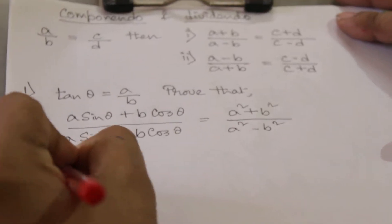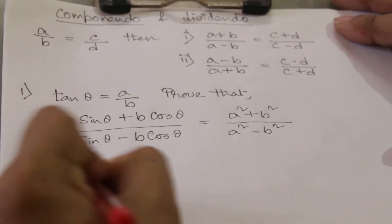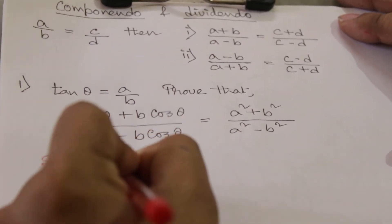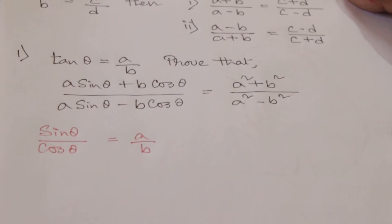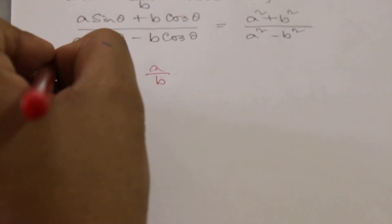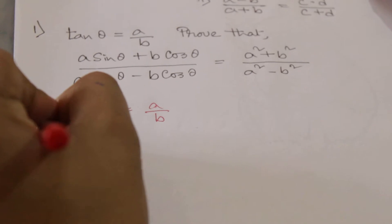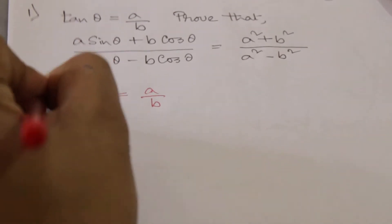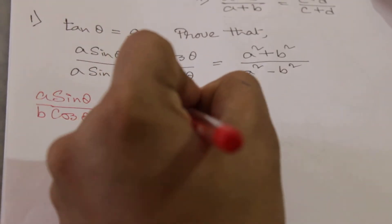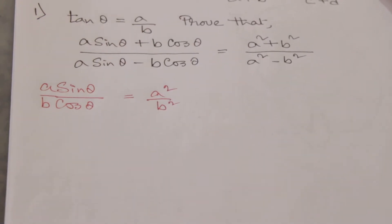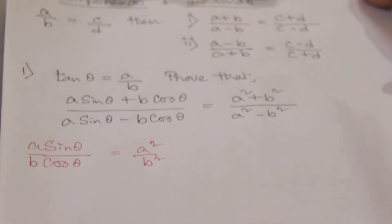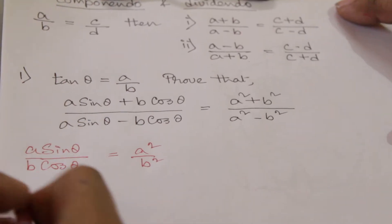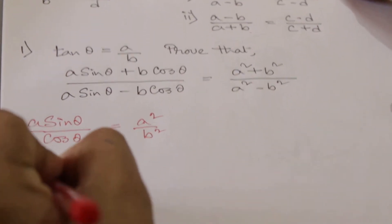We can write tan θ as sin θ/cos θ, which equals a/b as given. We will multiply both sides by a/b, so this becomes a sin θ/(b cos θ) = a²/b². Now we will apply componendo and dividendo.